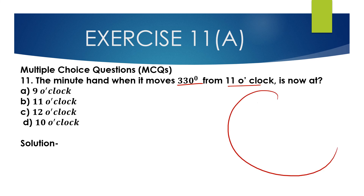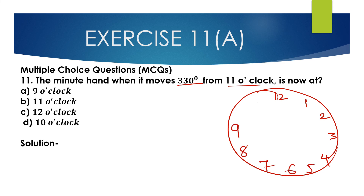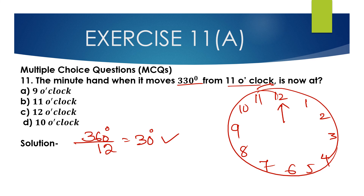First, draw the figure of a clock. This is 12, 1, 2, 3, 4, 5, 6, 7, 8, 9, 10, and 11. The complete whole circle is 360 degrees and there are 12 numbers — 12 rotations — and each angle is 30 degrees. So from 11 to 12, it is 30 degrees.